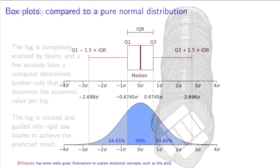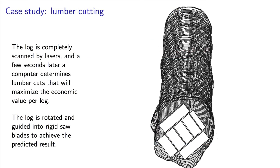Now let's look at a box plot from an actual dataset that I've worked on before. When lumber is cut in a modern sawmill, the tree trunk is scanned with lasers, and the optimal number of cuts and positions are determined by a computer.